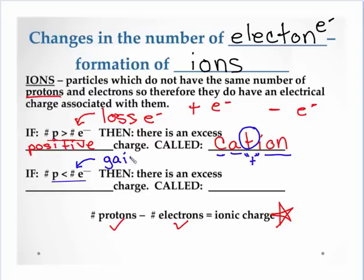So this happens when there is a gain of electrons. Now I have excess negative charge. And we call that an anion.